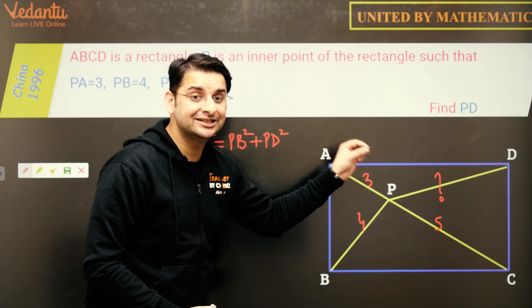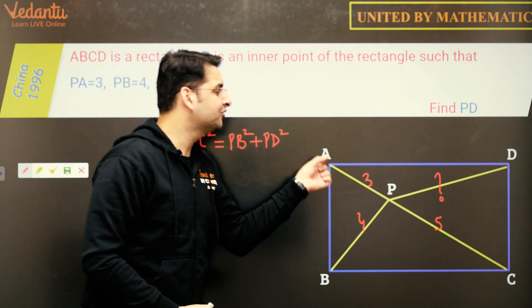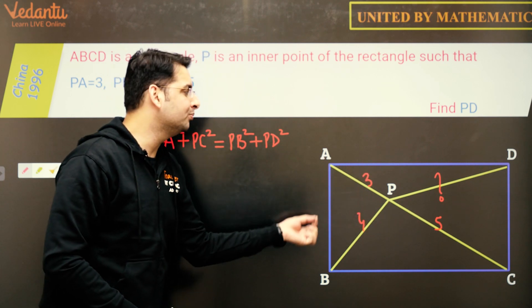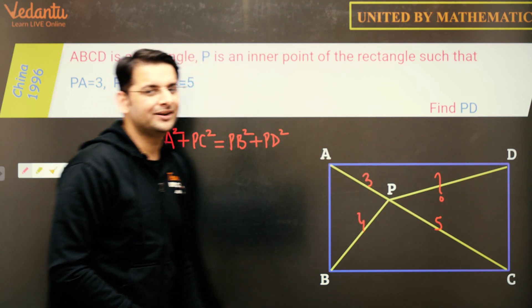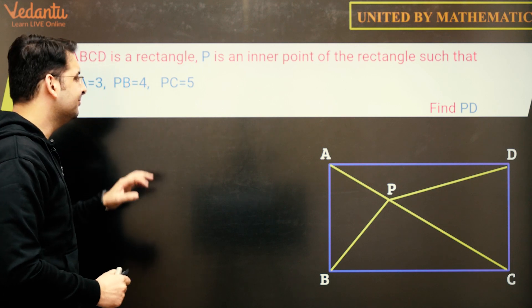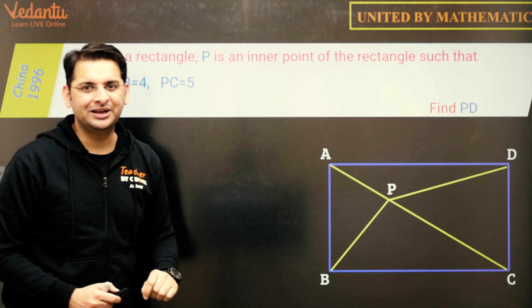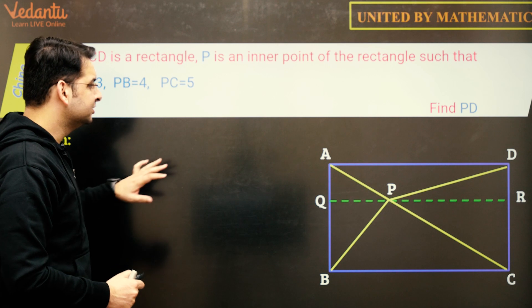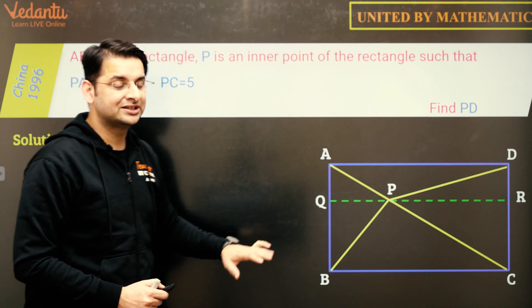So P is any point inside the rectangle, this holds good. PA square plus PC square will be equal to PD square plus PB square. And let us try to prove this claim before we find the value of PD. So what is the way to prove this claim?